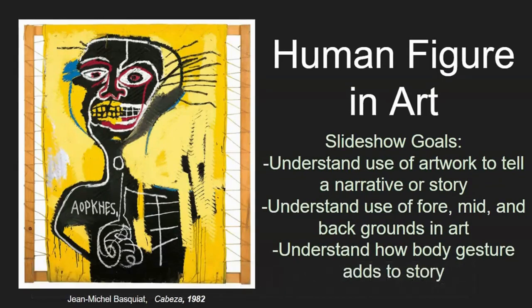Today we are going to start looking at our next unit in art. For this unit we're going to focus on how to draw proportional people, using proportional people in a gesture or pose, developing a scene that has a foreground, a middle ground, and a background using four techniques to create the sense of space in an artwork, and how we can combine both the people and the setting to create a narrative or a story.